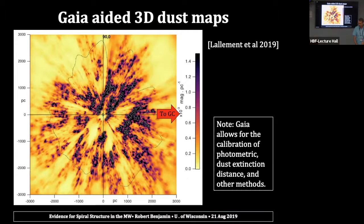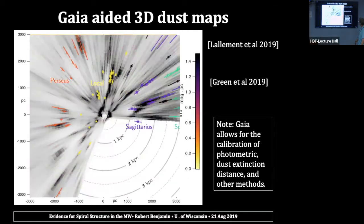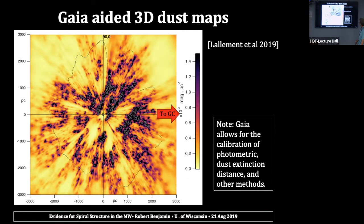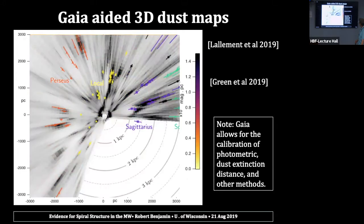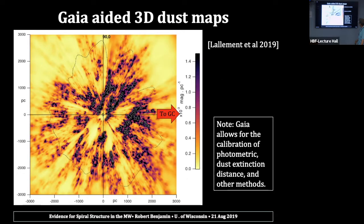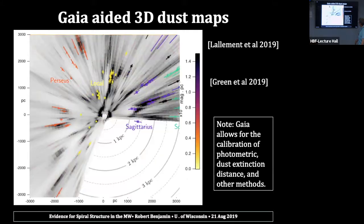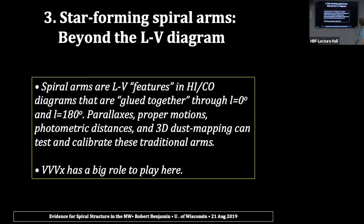These are two examples of dust maps that have come out in the last year, using Gaia to get distances to stars and looking at extinction versus distance. One map from Rosine Lallement and a second map from Greg Green — I'll blink them. You see generally the same things, with some differences to worry about. So that's near the sun.